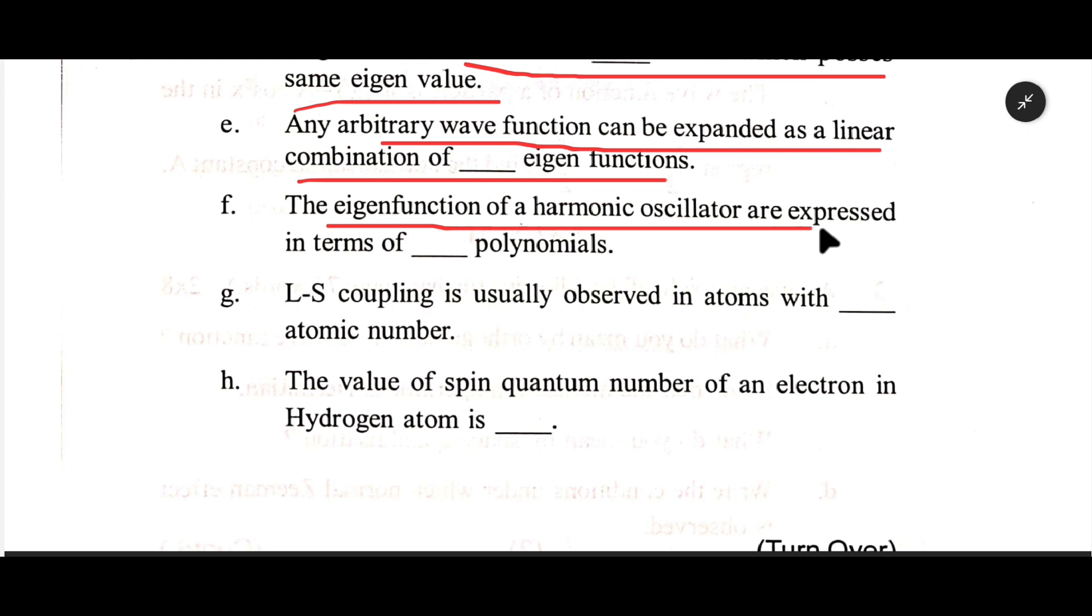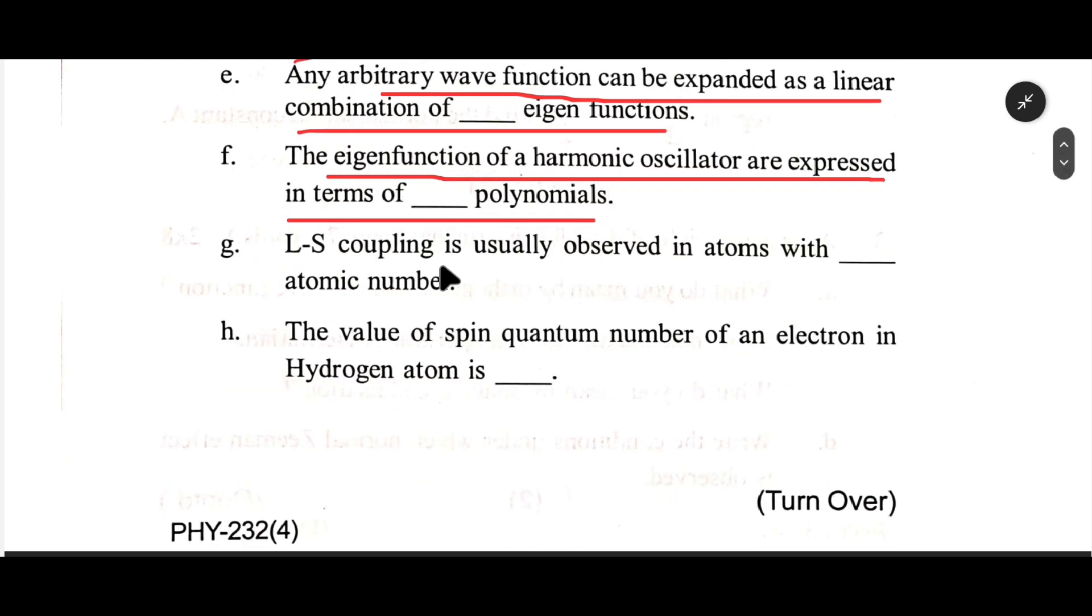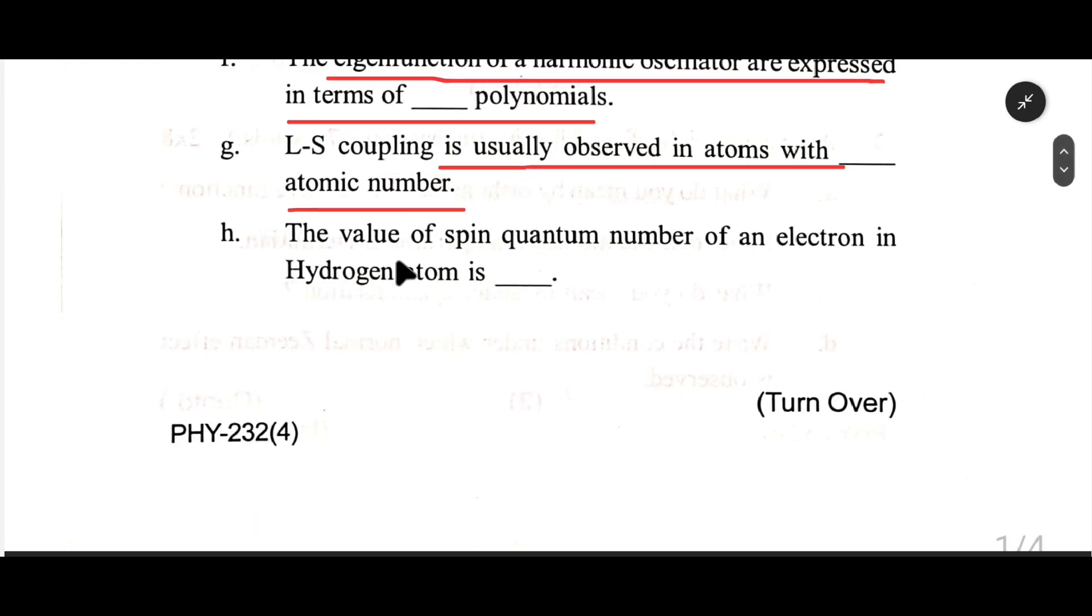The eigenfunctions of a harmonic oscillator are expressed in terms of dash polynomials. g. LS coupling is usually observed in atoms with dash atomic number.